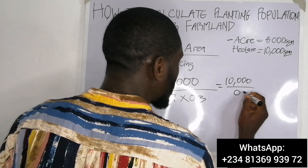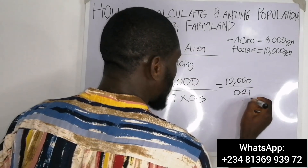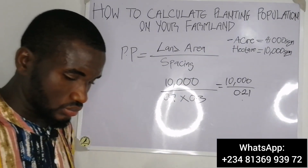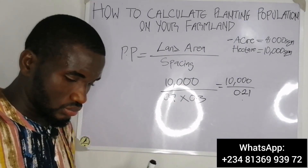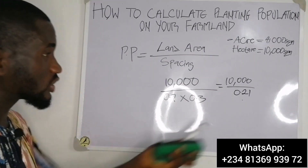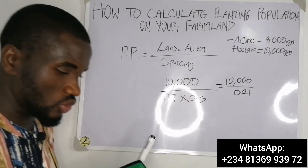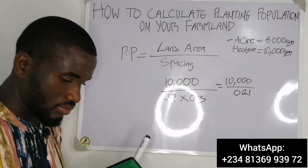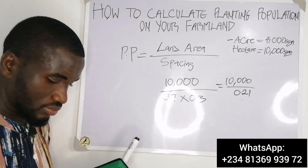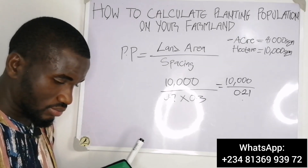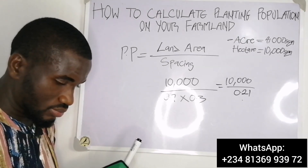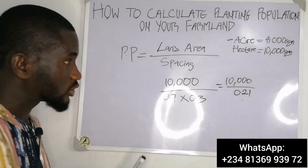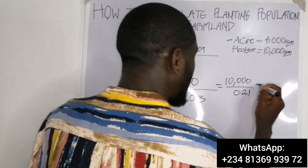We convert 70 centimeters to 0.7 meters and 30 centimeters to 0.3 meters. Multiplying these gives 0.7 times 0.3 equals 0.21. So the calculation becomes 10,000 divided by 0.21, which gives approximately 47,619 maize stands per hectare.